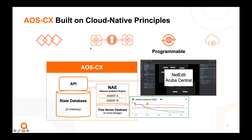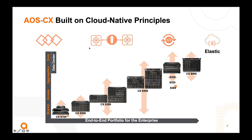Finally, there is elasticity. Why do we say that AOS CX is elastic? The AOS CX operating system today runs on many different switch series independently of their size, network location — for example branch, campus, or data center — and role: access, aggregation, or core.